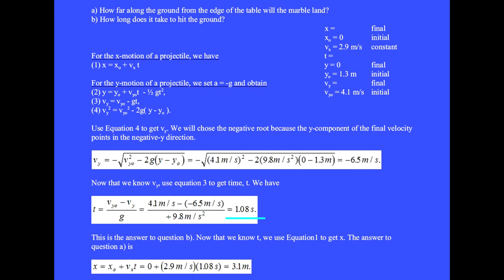Now that we know time t, we use equation 1 to get x. The answer to question A is x equals x sub zero plus v sub x times t equals 0 plus 2.9 meters per second times 1.08 seconds, and we get 3.1 meters.